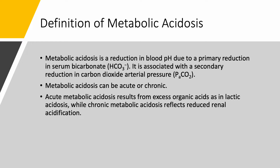Metabolic acidosis can be acute or chronic. Acute, like you see in sepsis — you have lactic acidosis, accumulation of organic acids. Or it can be chronic, like people with chronic kidney disease, where we have problems with the primary renal acidification.